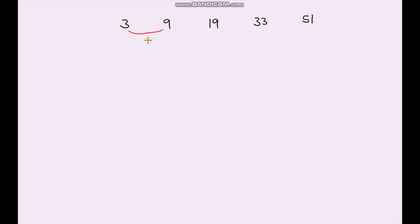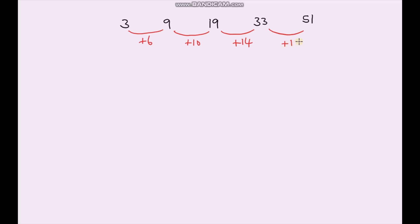The difference between 3 and 9 is +6. The difference between 9 and 19 is +10. This difference is +14, and then finally +18. You can already see this isn't an arithmetic sequence because the difference between each term is not the same — it's actually different each time.